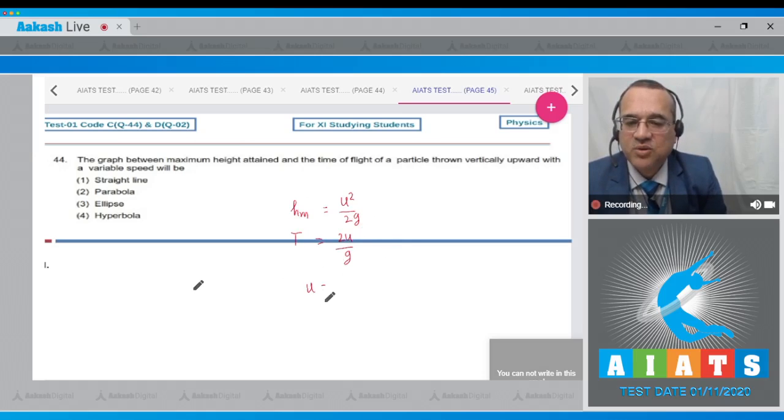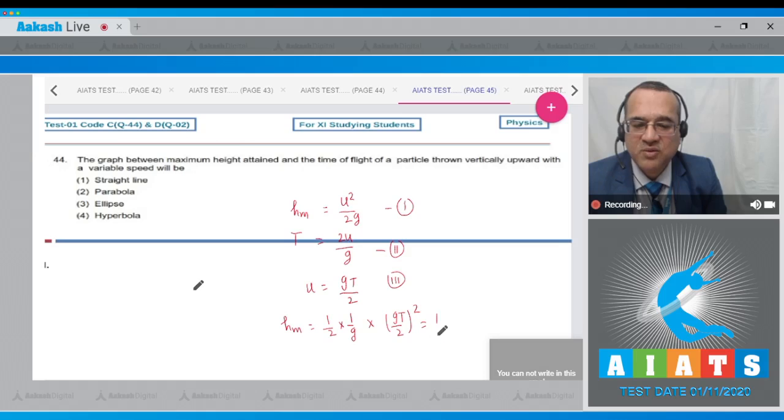He is keeping different u and wants to find the relation between h and t. From here, I calculate the value of u. u is equal to gt divided by 2, and I will fill in equation number 1. So h maximum becomes equal to 1 by 2 into 1 by g into (gt by 2)². This becomes 1g cancel out, 1 by 2 and 1 by 4, 1 by 8 into g into t². This whole thing is constant. So h_m is proportional to t². This is similar to y equals constant into x².